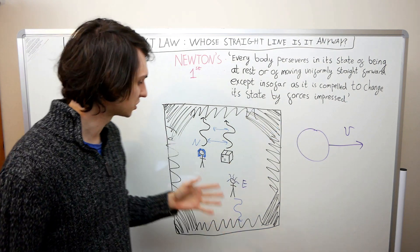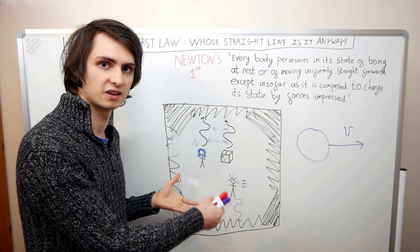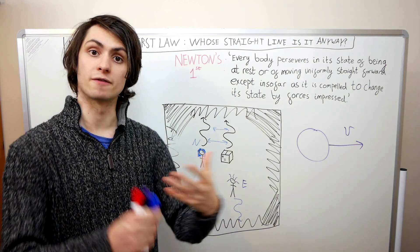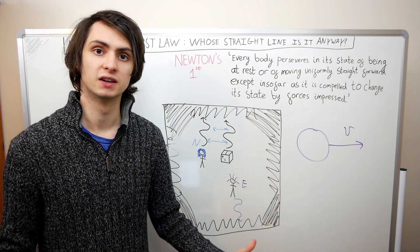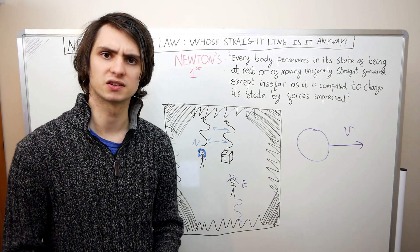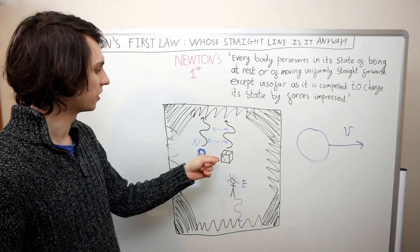Relative to what do we decide when an object really is travelling in a straight line with a constant velocity? We need to pick a perspective with respect to which we measure everything. We can see from our situation here, however, that we can't just say that everyone's perspective is equally valid.